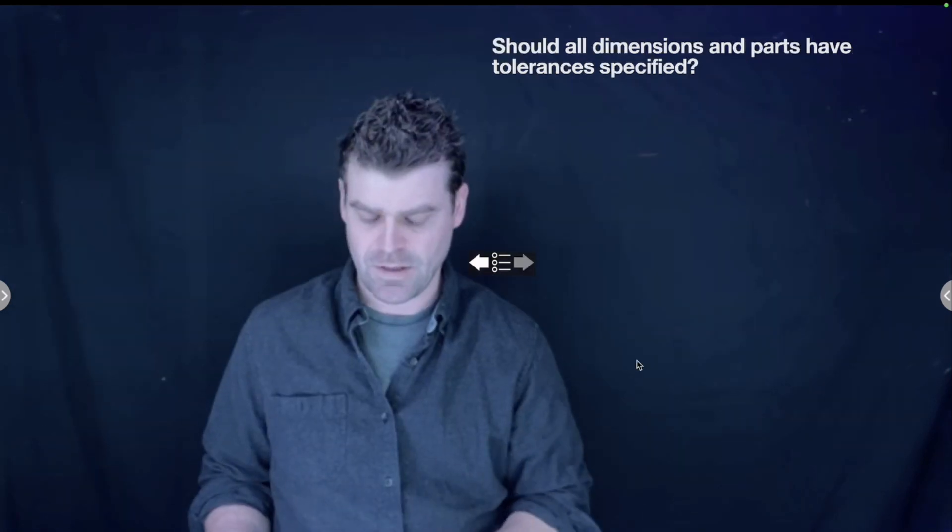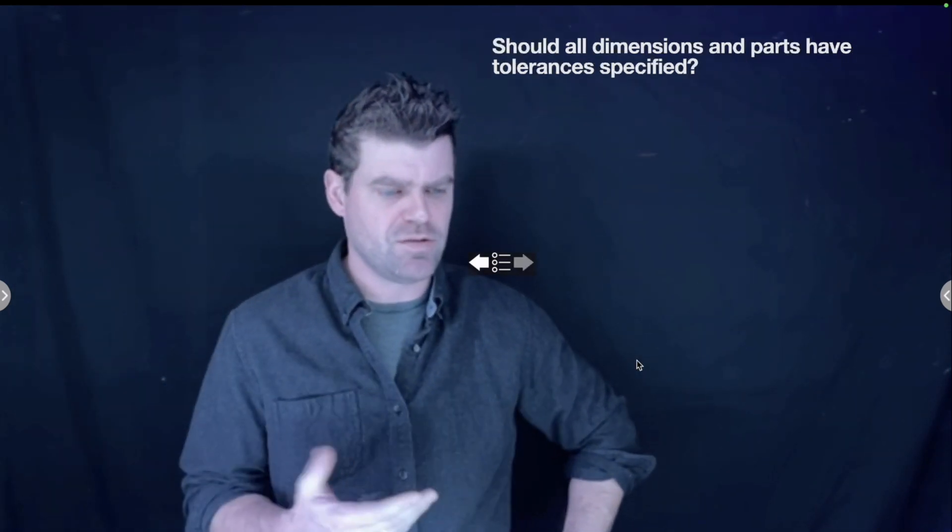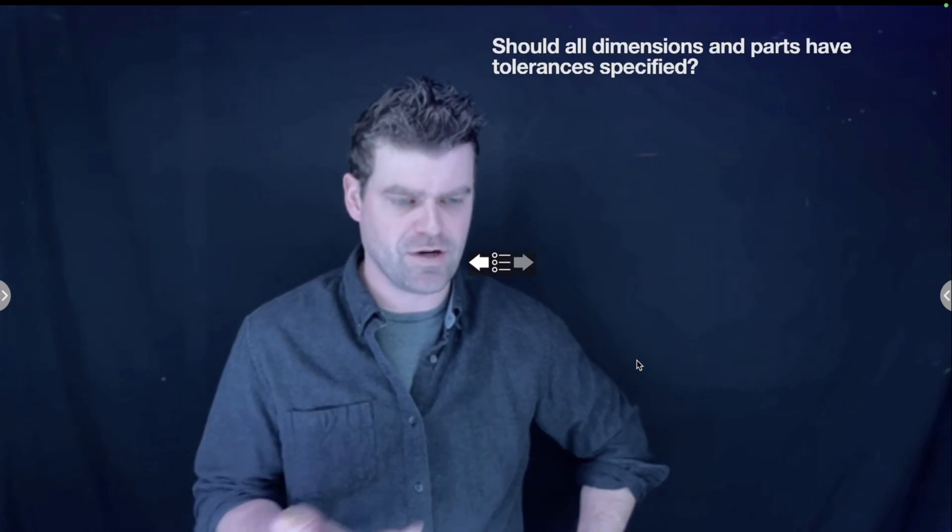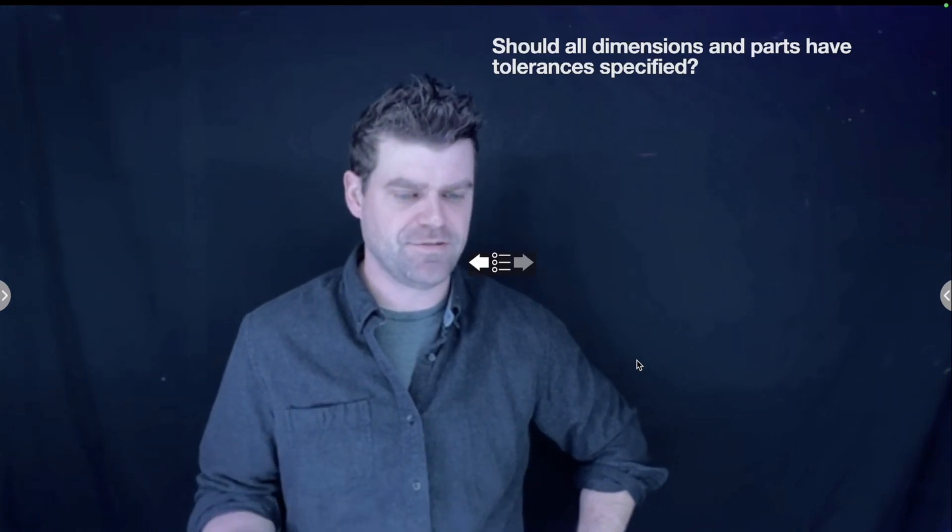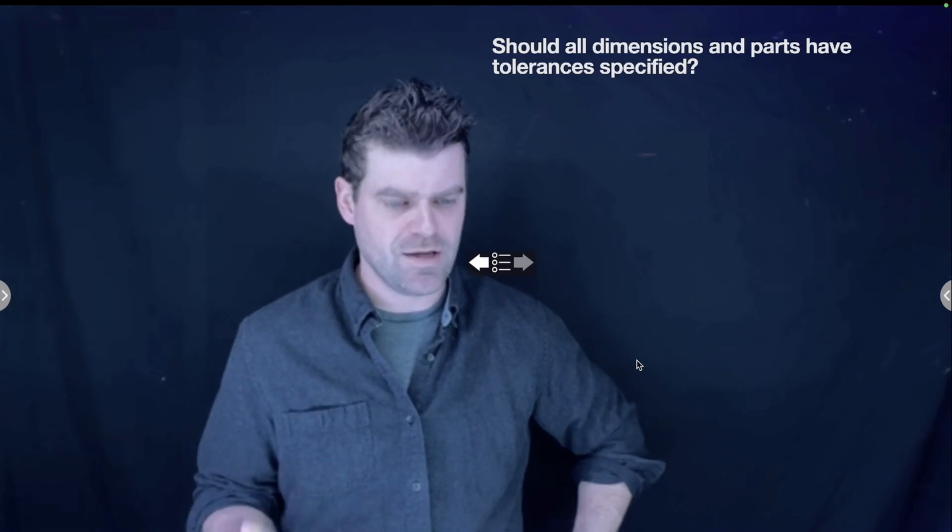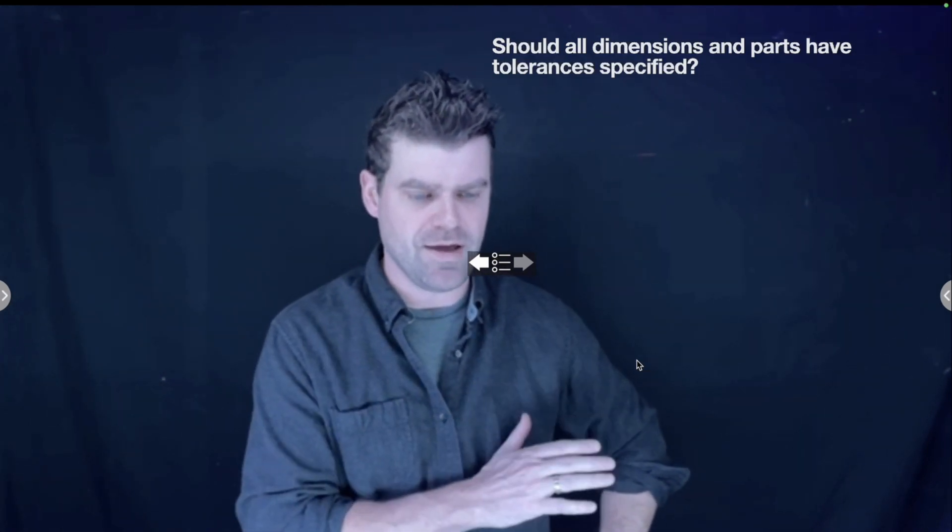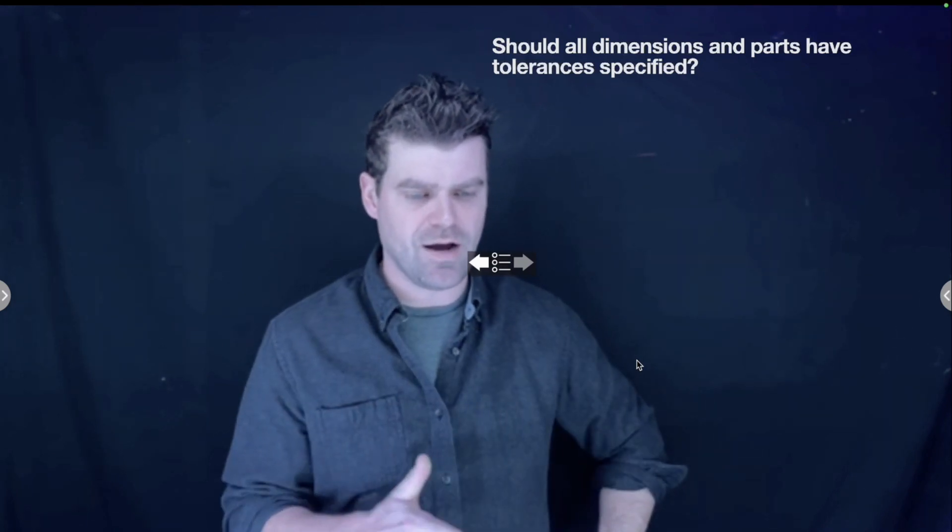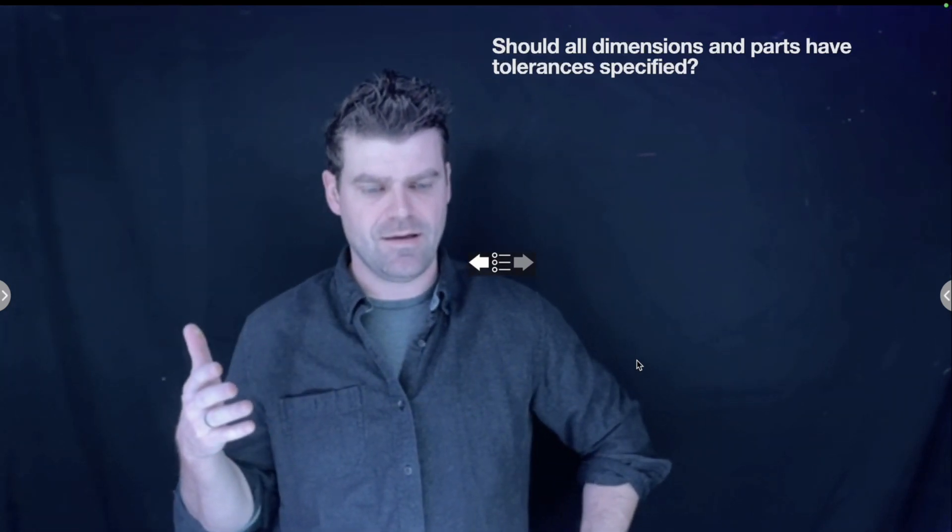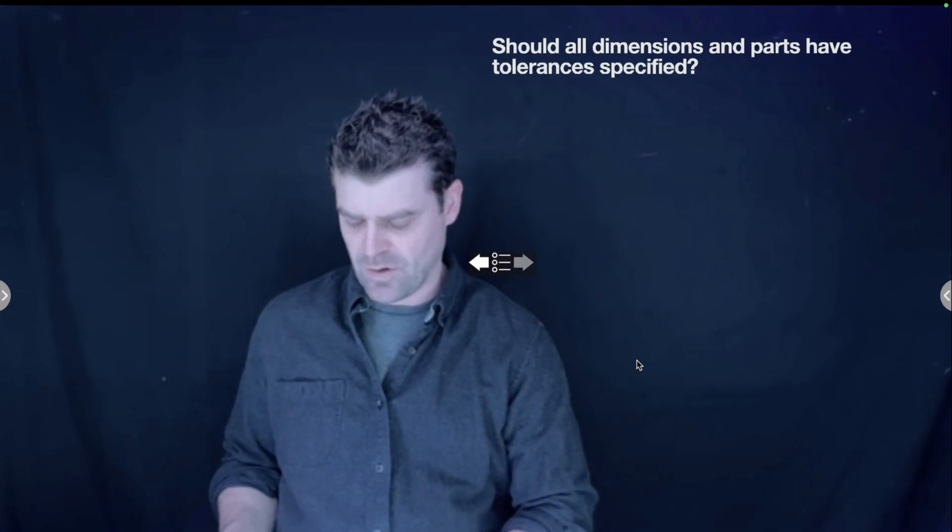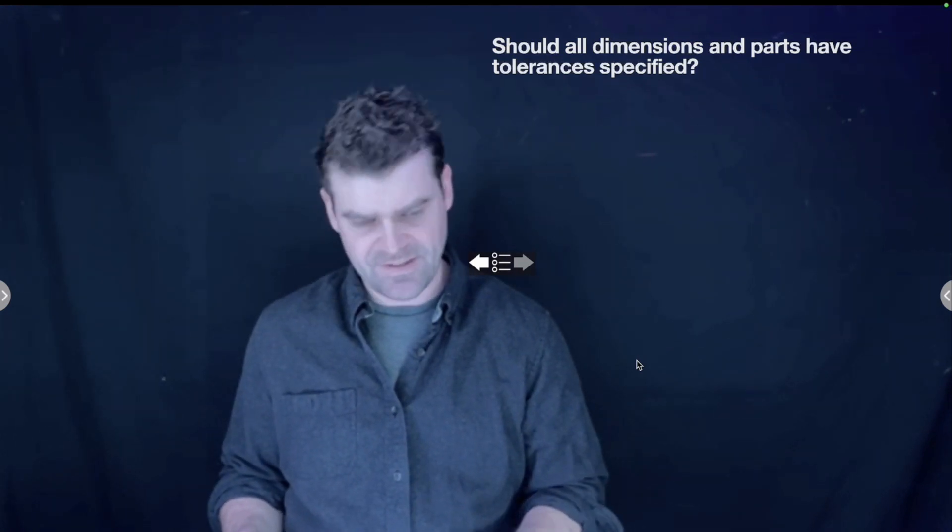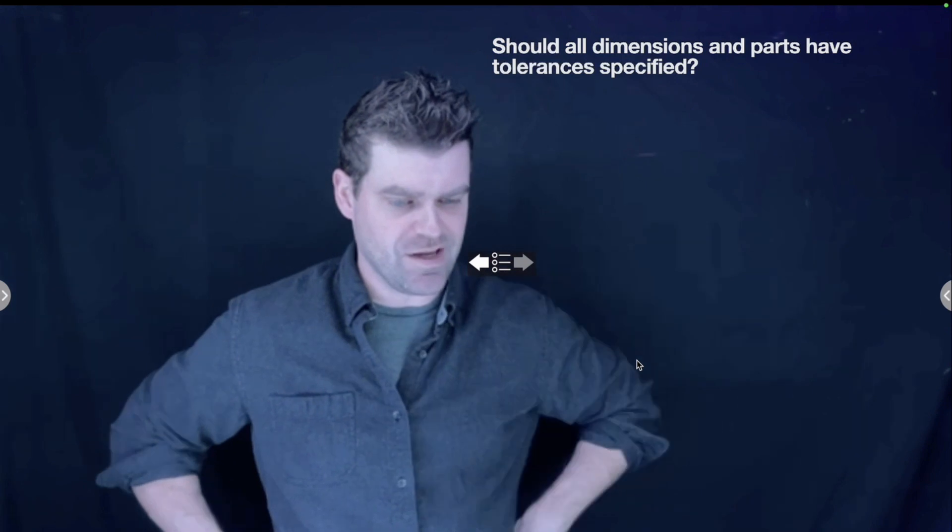So even though we have a five thou range in both of these unidirectional and bidirectional tolerances, they're going to shoot to try and make it whatever the nominal dimension is. And so last up, should all dimensions and parts have on a technical drawing or a working drawing have the tolerance specified? And the answer is no, you don't need to specify everything.